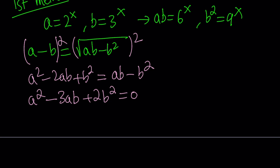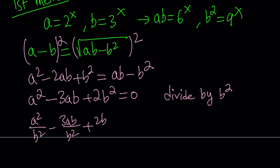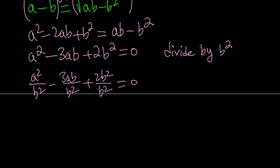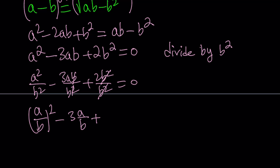Now, how do I solve such an equation? I'll show you the general method because these equations are not always factorable. This is a homogeneous equation of the second degree, so we divide by b squared. First, note that if b is zero then a is also zero — but 2 to the power x can never be zero, so a and b cannot be zero, and it's safe to divide by b squared. After dividing, we get the quantity a over b squared minus 3 times a over b plus 2 equals 0.